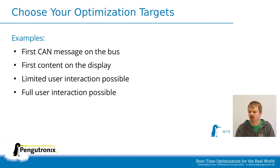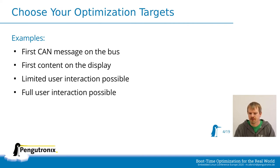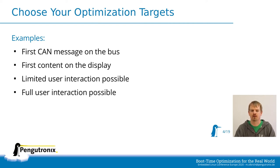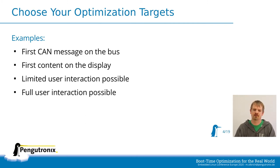We want to show something on the screen — anything to show the user that powering on the device actually did something. Then there may be the point where the first user interaction is possible — for example, we can log in if there is a login screen, or I have the first view that shows initial information. And then usually later comes full interaction, where the device is fully working and all features are accessible.